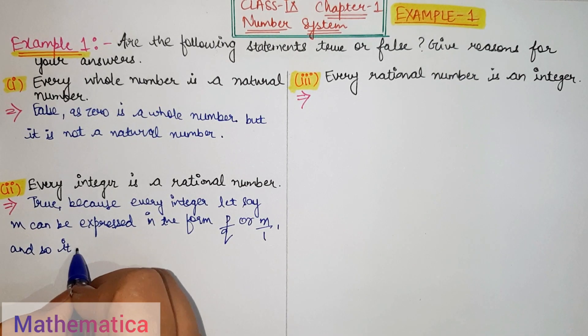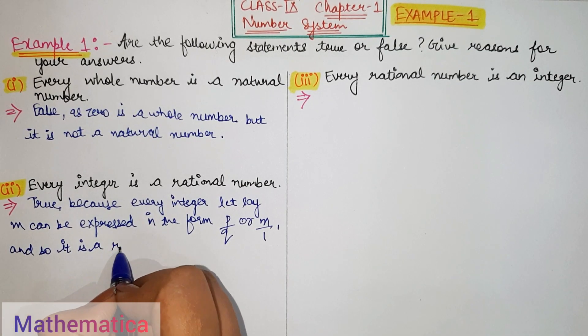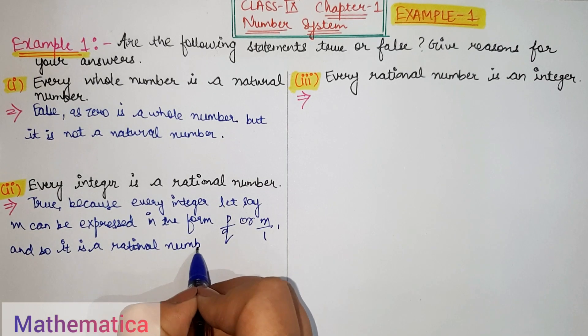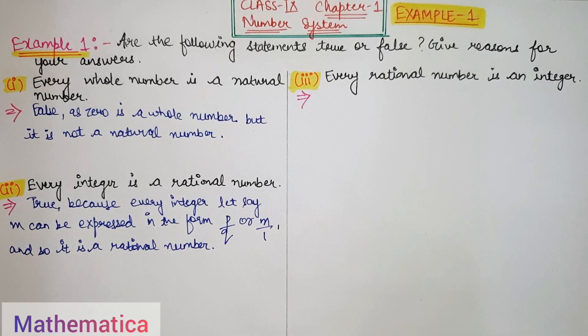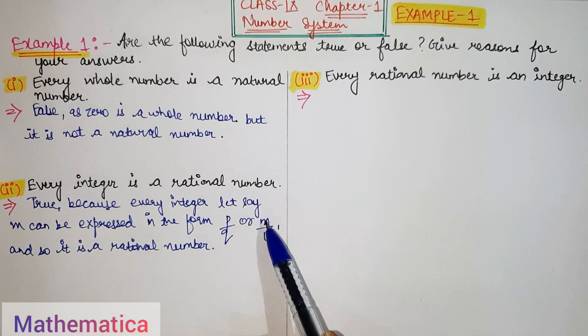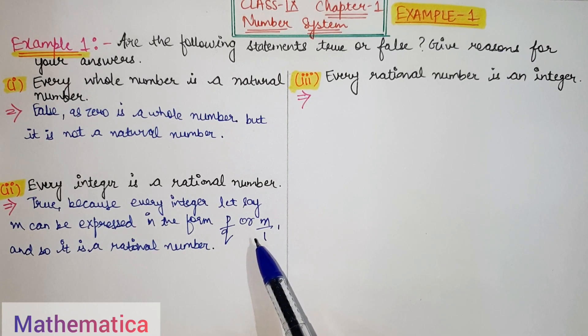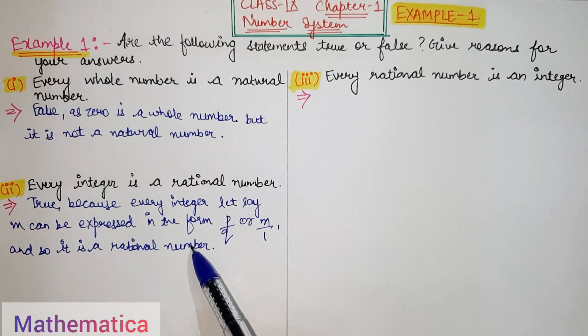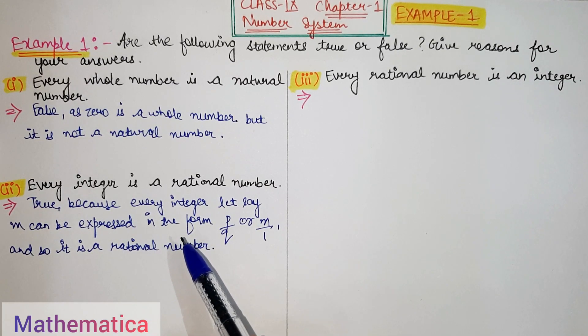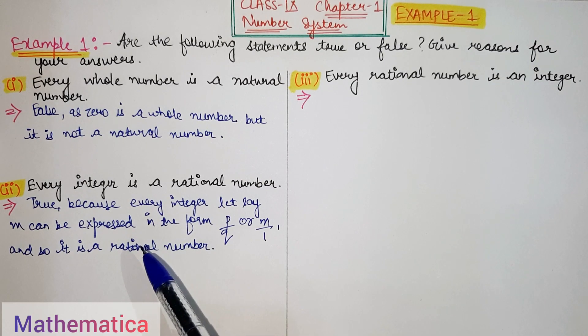And so it is a rational number. Clear? Because every number M, how can we express? M by 1. Means 2, 5, etc. So it is a rational number. We can express. Clear?